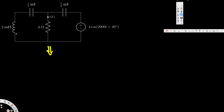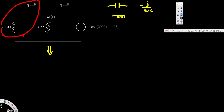Before we convert, let's write the terms — what these values are going to be in phasor domain. When we convert this inductance and this capacitance into phasor domain, all of these are going to become impedance. We can combine these two together because impedance is treated the same as resistance. When we have impedances in series, we can add them together. So we can combine these two and call this Z1. We need to know omega — in our case, omega equals 2000, since that is the value multiplying t in the source equation.